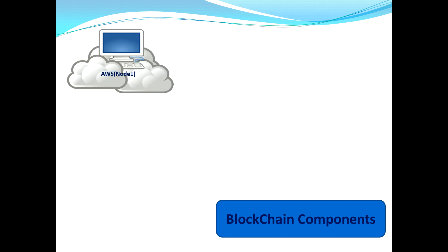Now let's put all those essential components in a logical flow. Think about it: we have one particular machine running on AWS cloud with EVM installed — EVM stands for Ethereum Virtual Machine. Then we have a smart contract. What exactly is a smart contract? The smart contract makes the blockchain platform programmable. Whatever feature you want to develop over the blockchain network, you achieve it with the smart contract. In simple words, a smart contract is a piece of code — a program.